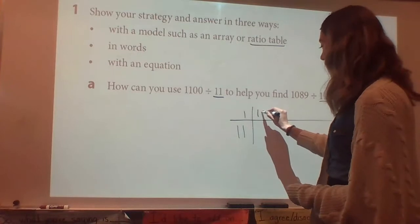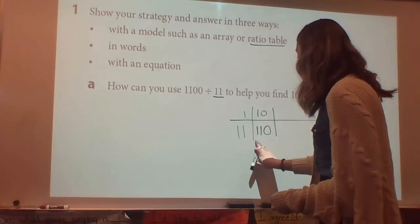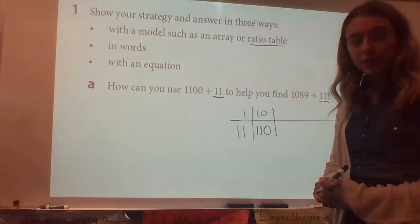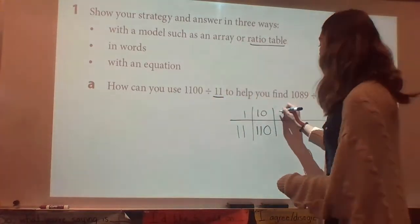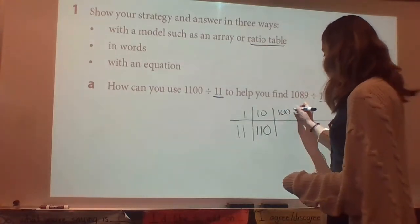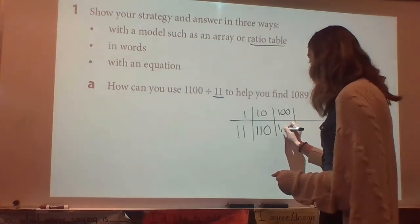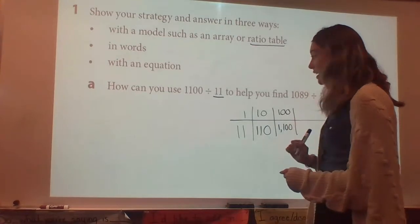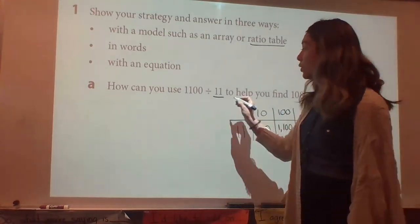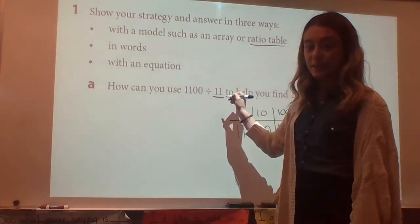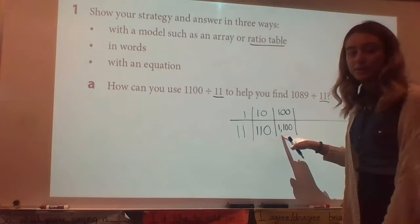11 times 10 is 110. Now our next nice round number to multiply that gets us close to 1100 would be 100. So 100 times 11 gets us exactly to 1100. Just like when we were doing powers of 10 — when you multiply by 100, you are moving that 11 up two place values, so those zeros become placeholders and you have 1100.